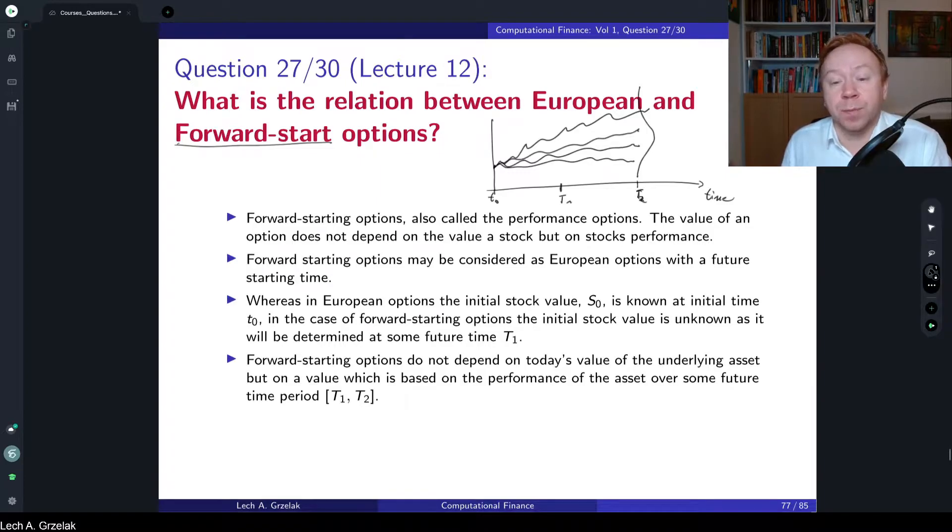Forward-start options, on the other hand, are not starting at time t0, but will be starting at time t1. This means they are starting at uncertain points in the sense of value of a stock. Because we don't know today what is the value of a stock in the future. We only know certainly what is the value of stock S(t) at time t0, but we don't know the value of the stock at time t1.